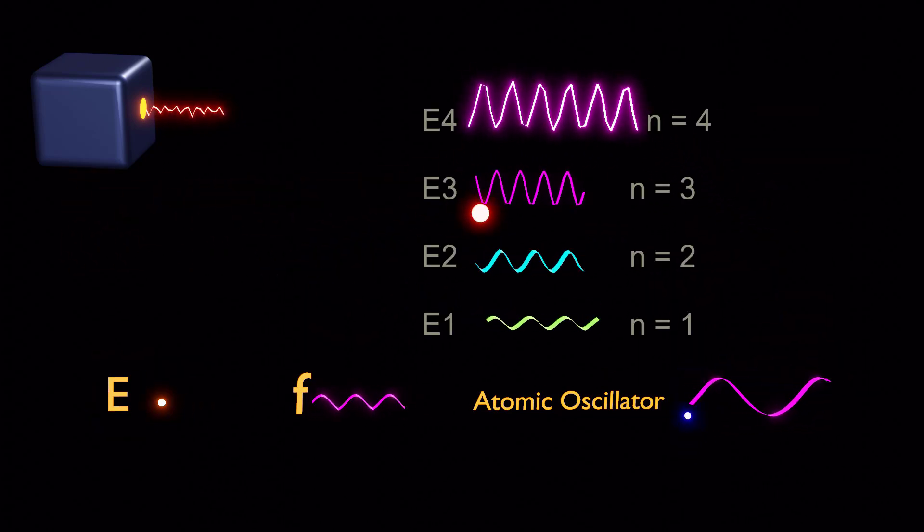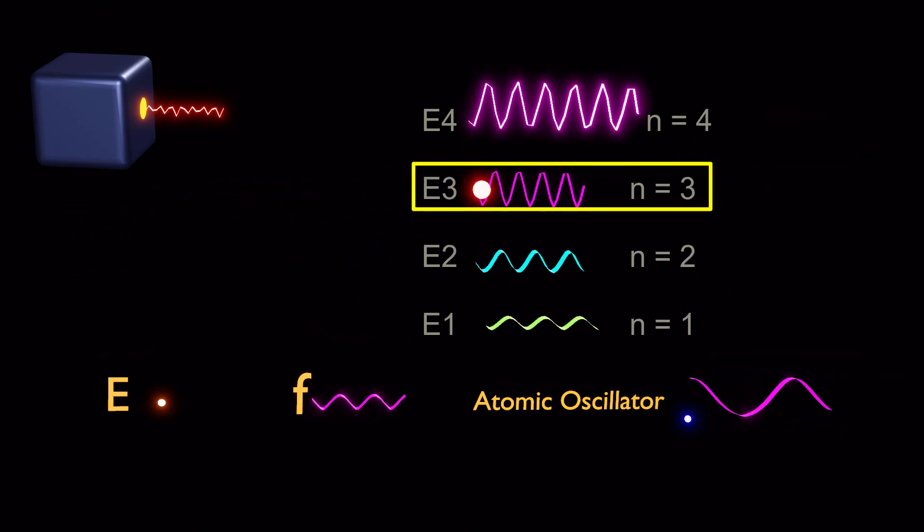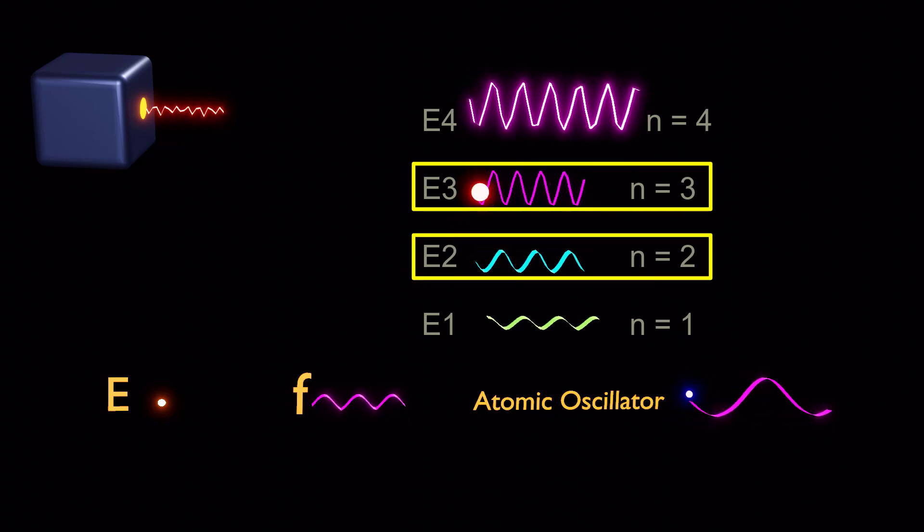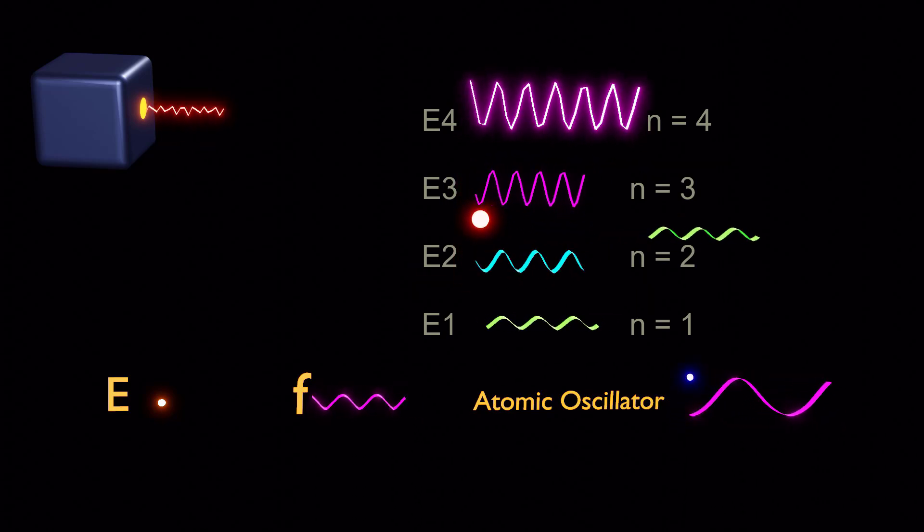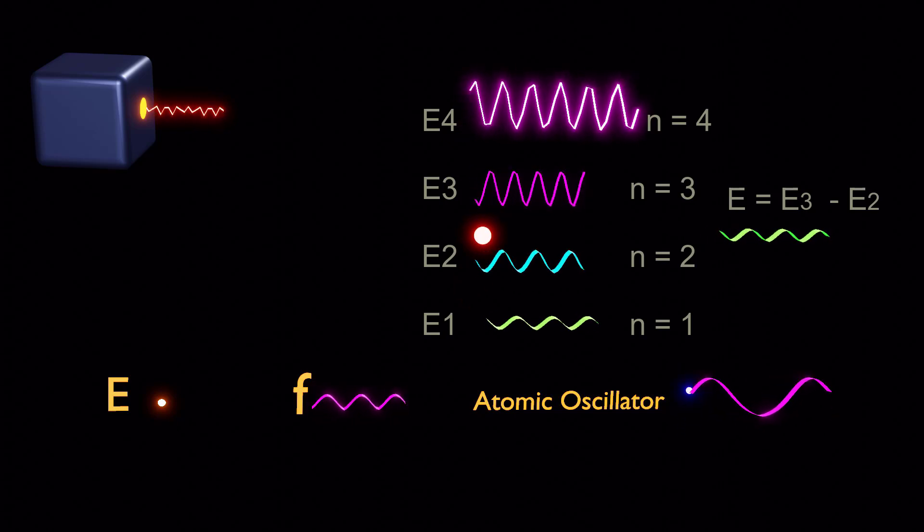An oscillator in high energy state E3 that jumps to a lower energy state E2 will emit a radiation of energy equal to the difference between the two states.